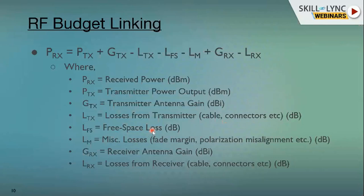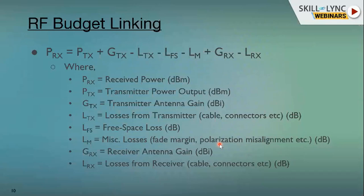For example, if you are designing a transceiver system working at 77 GHz — essentially a radar — and driving through frozen-temperature regions, free space loss will be very high. You must account for this in your system, meaning components must support low temperatures as well as environmental losses. Additionally, miscellaneous losses such as fade margin and polarization loss depend on the antenna type and communication protocol used — ASK, PSK, FSK, or higher-order modulations.